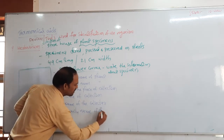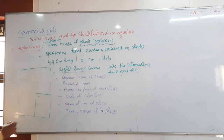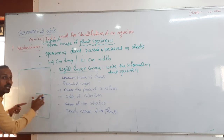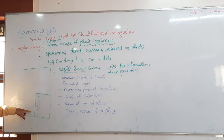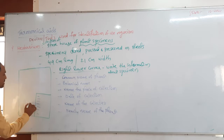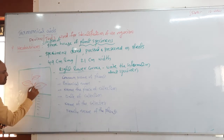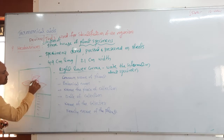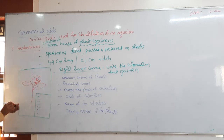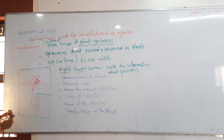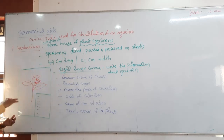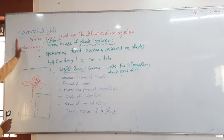All these details are written in the right lower corner in serial order. For the specimen, we collect a small twig - one small branch. We then dry it, press it, and preserve it on the herbarium sheet.